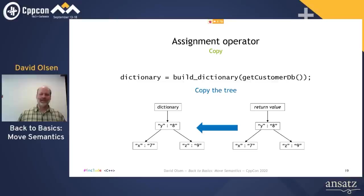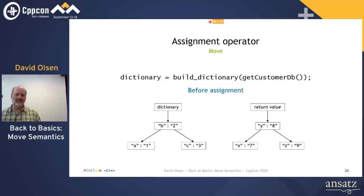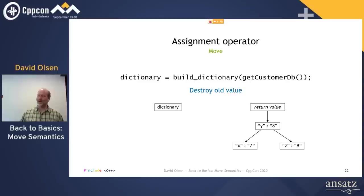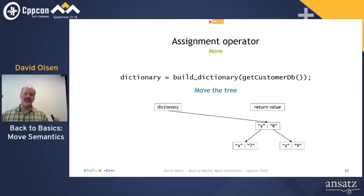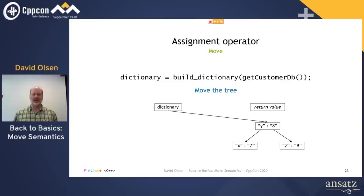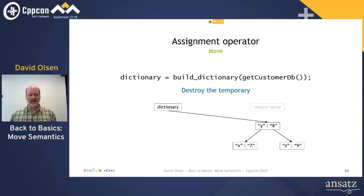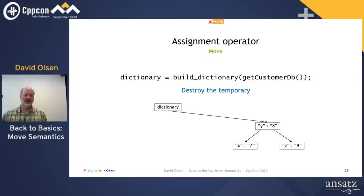Let's look at what we would like the assignment operator to do. Going back to before the assignment starts: dictionary has its old value, the return value temporary object has the new value. We start by destroying the old value — there is no way to avoid doing that. But then, rather than copy the tree, what we really want to happen is to move the tree from the return value object to the dictionary variable. Have the dictionary point to the existing tree and change the return value object so it doesn't point to anything. No allocating or freeing memory, no copying data, just adjusting a couple pointers. When that's done, we destroy the return value temporary object, but because it doesn't own a tree anymore, that's essentially a no-op. The result is the same as when the tree was copied — dictionary correctly holds the new value, but no copying involved.